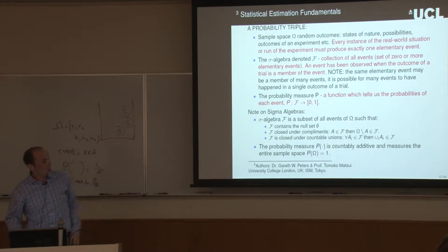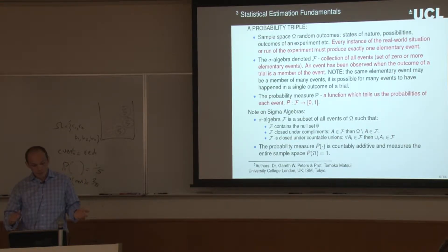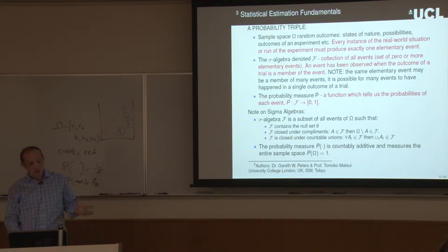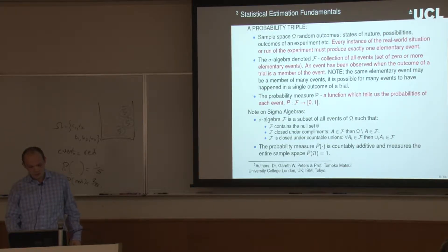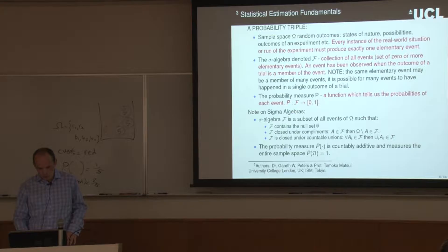The probability measure P is a function which maps our sigma algebra F to the interval [0, 1]. Important properties of sigma algebras: it must contain the null set, be closed under complements — if event A is a member of F then the complement of A also has to be in F — and closed under countable unions. The probability measure must be countably additive and the measure of the entire sample space must equal one.